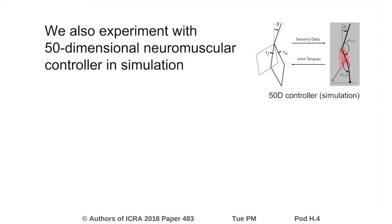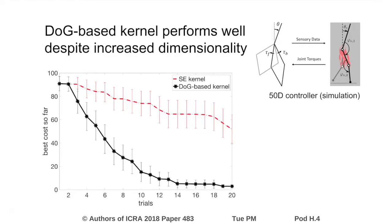We also experiment with a 50-dimensional neuromuscular controller in simulation. This case presents a significant challenge for optimization not only because of the high dimensionality, but also because of the sensitivity of the neuromuscular control. Despite the challenges, the DOG-based kernel performs well.